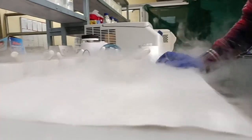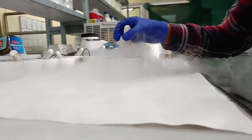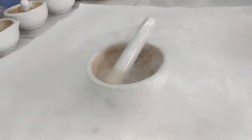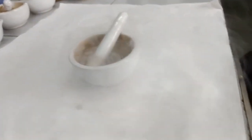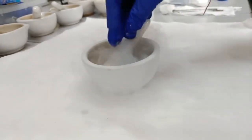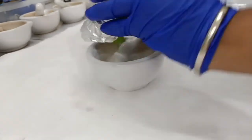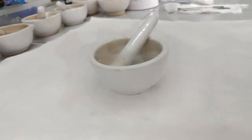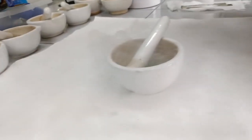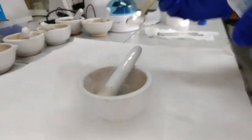Here we are adding liquid nitrogen in our mortar which we are going to use to crush our plant sample, and add some PVP so that it will be easy crushing.